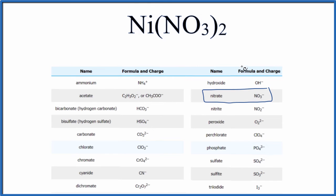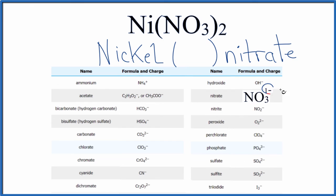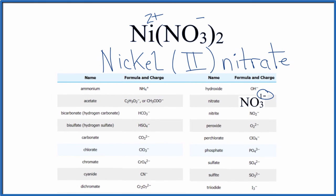Now you try one. Ni(NO3)2. Pause and give this one a try. So nickel, that's a transition metal. NO3 is nitrate. We know we have a one minus charge on the nitrate here. Two times one minus is two minus. Nickel has to be two plus. Nickel two nitrate.